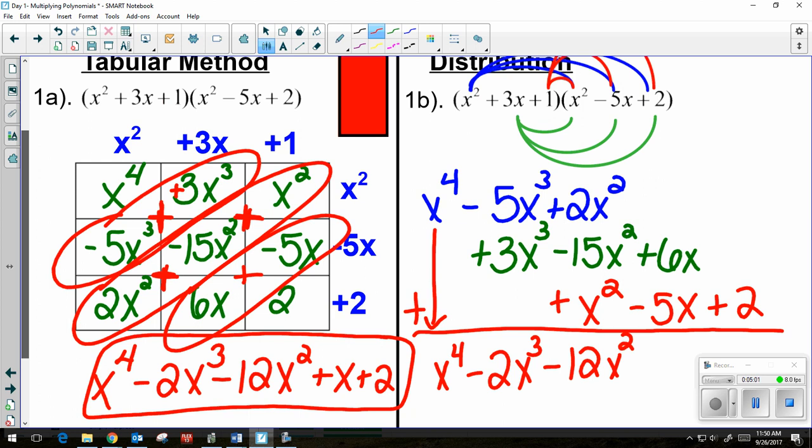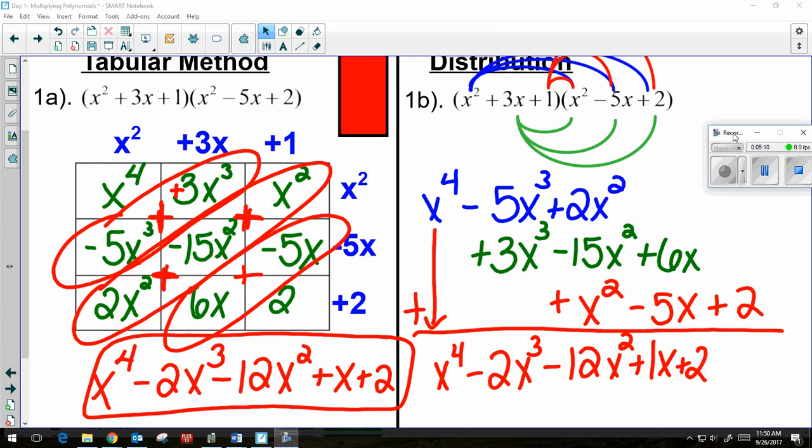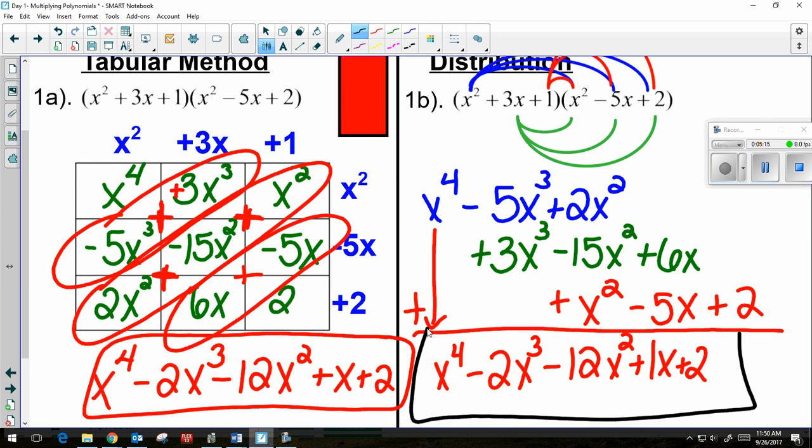A positive 6x and a negative 5x is a plus 1x. And then my plus 2. Let's move that out of the way. So there you go. We get the same answer regardless of which method we used.